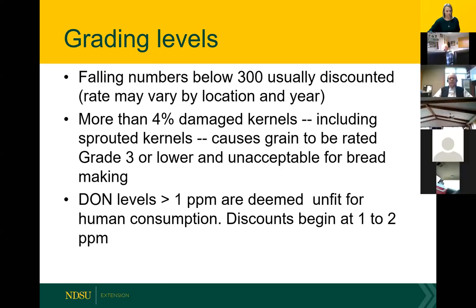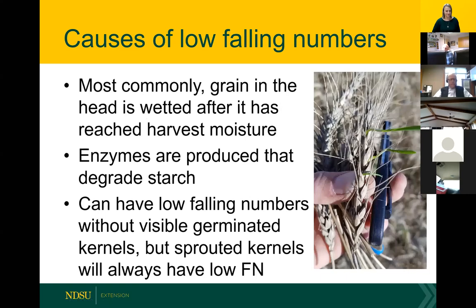As far as damaged or sprouted kernels are concerned, more than four percent damaged kernels including sprouted kernels cause grain to be graded grade three or lower, and it's typically unacceptable for bread making. Discounts will certainly come into effect. DON levels — we have an advisory level of one part per million in food. Discounts generally begin at either one or two parts per million; they can mill out about one part per million or about half of the DON levels.